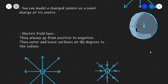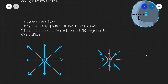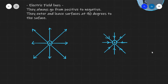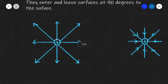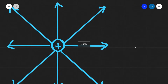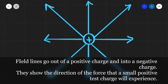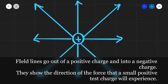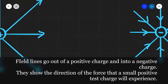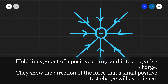The electric field lines themselves follow a few rules. First, they always go from positive to negative. They also enter and leave surfaces at 90 degrees to that surface. For instance, if we have a positive charge sitting by itself, the field lines will be coming out of it radially. For a negative charge, the field lines go into the charge.